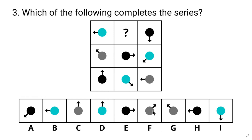Now let's look at the pattern of the arrows. In the first column, the arrow is rotating clockwise and each time it rotates 45 degrees. Checking the last column — yes, the same pattern applies there as well. Applying the same logic to the second column, the first arrow should point in the northeast direction. So the answer is clearly F.